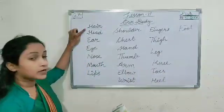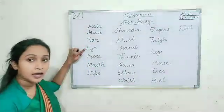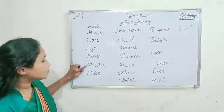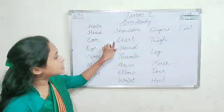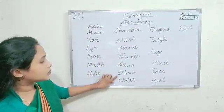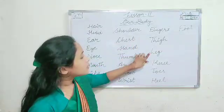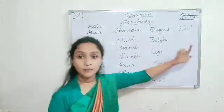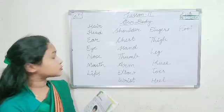So we have learned: hair, head, ear, eye, nose, mouth, lips, shoulder, chest, hand, thumb, arm, elbow, wrist, fingers, thigh, leg, knee, toes, heel, foot. That is our body parts name.